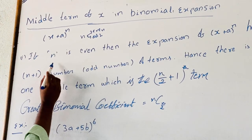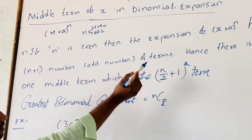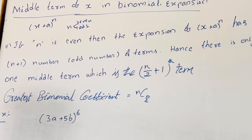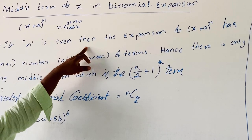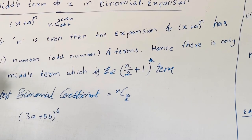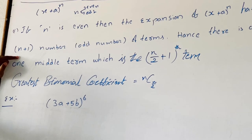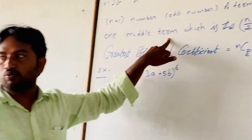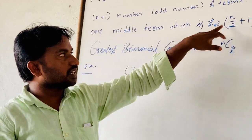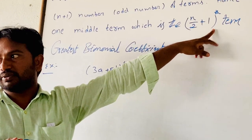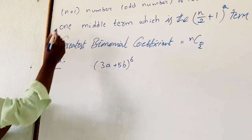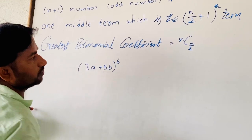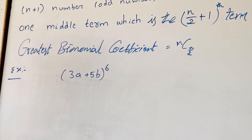Now if n is even, then the expansion of (x + a)^n has n plus 1 number of terms. Hence there is only one middle term, which is the T(n/2 + 1) term. In this expansion, the greatest binomial coefficient is nC(n/2).